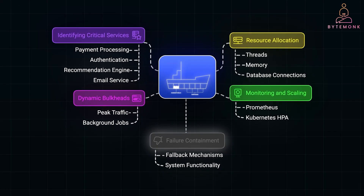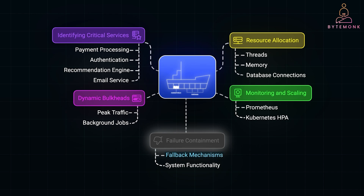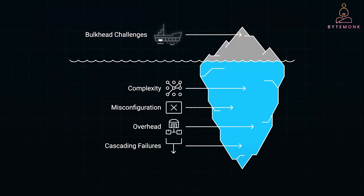Think about how failures will be contained. If a service fails, the bulkhead should protect the system from cascading failures, but you also need to ensure that the system has the right fallback mechanisms in place to maintain functionality. While the bulkhead pattern can dramatically improve resilience, there are several challenges to watch out for. Partitioning resources and managing isolated thread pools or connection limits adds complexity, and you will need to constantly adjust and tune these settings as the system evolves and scales.